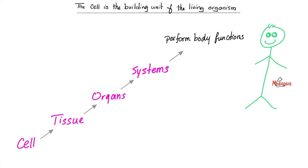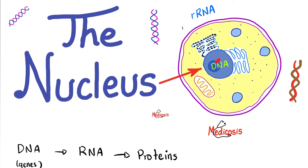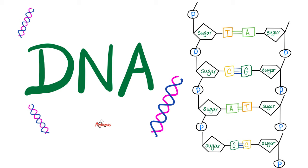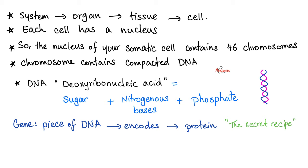Who is the brain of the cell? The nucleus, because it contains your DNA — deoxyribonucleic acid — which is made of three things: sugar backbone, phosphate, and nitrogenous bases. What's the function of this DNA? It encodes for proteins, such as your enzymes, which carry out lots of body functions.